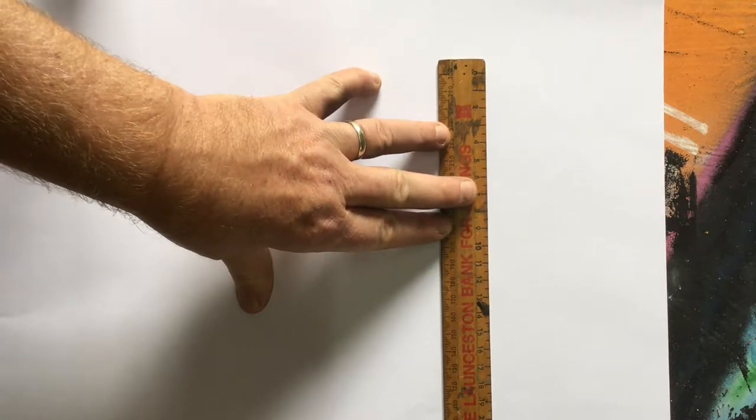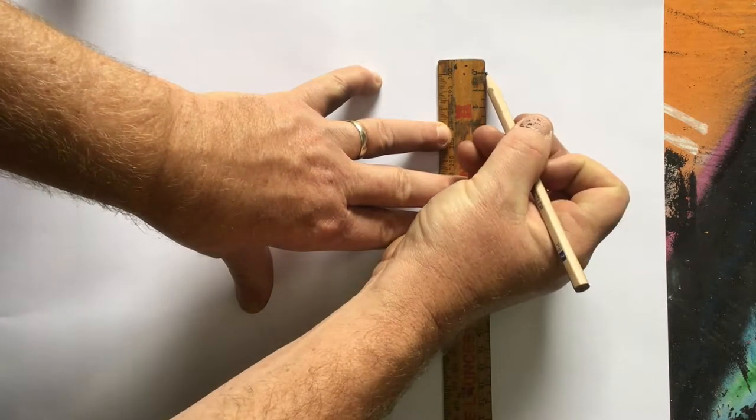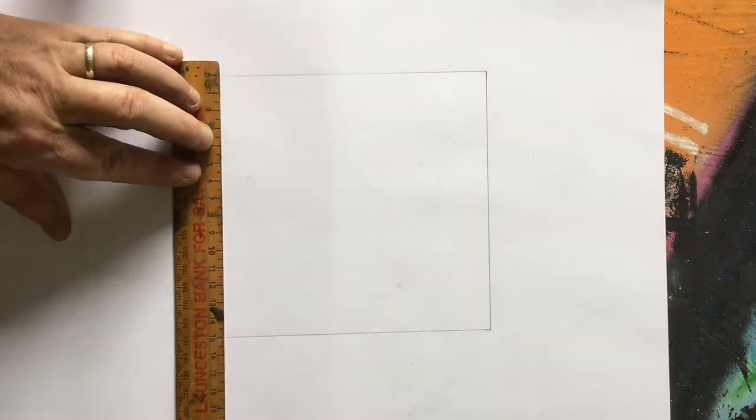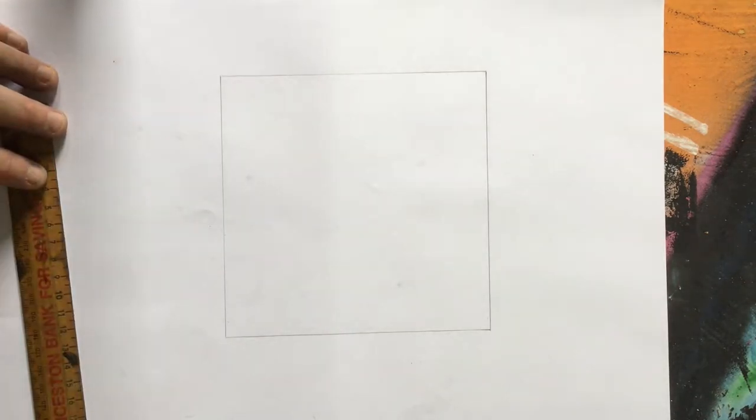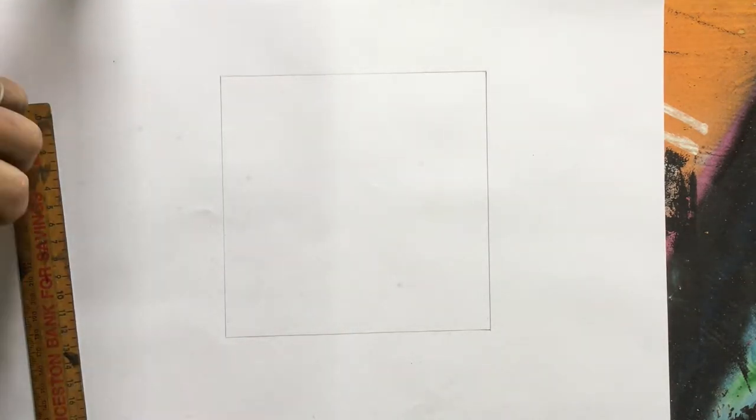Okay, next I'm just going to mark off some equal points. I'm going to make each point say three centimeters to fit into my square nicely.